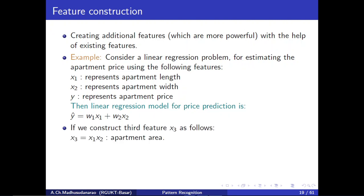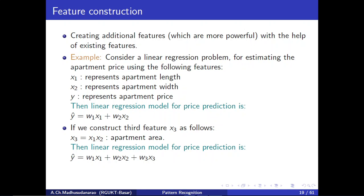In general, if you want to predict the price of a flat, it is better to consider the flat area or apartment area instead of the length and width separately. So what we are going to do is construct a third feature x3 from the two existing features: x3 equals x1 times x2, representing apartment area. Then we predict price using all three features: y-hat equals w1*x1 plus w2*x2 plus w3*x3.